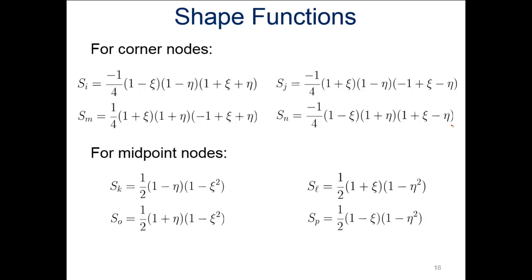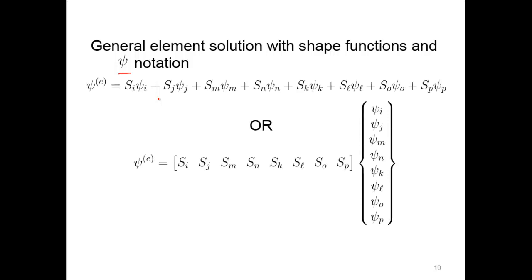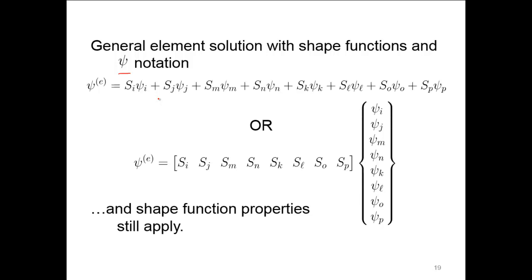Determining the shape functions for the eight-node element is a substantial task, but it can be done. For the corner nodes i, j, m, and n we have one set of shape functions, and for the midpoint nodes k, l, o, and p we have another set. Using general psi notation in matrix form, the shape function properties all still apply. The key pattern here is just the nuances of how many nodes we have and how we locate them.